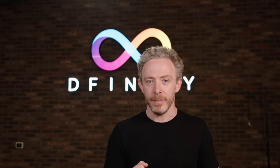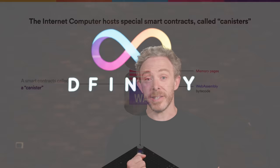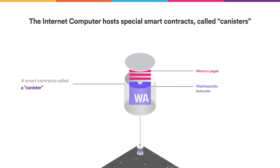Like all blockchains, it is unstoppable and the code it hosts is tamper-proof. The Internet Computer hosts special smart contracts called canisters. A canister is a bundle of WebAssembly bytecode logic, which you can create from any high-level programming language such as Rust or Motoko, and memory pages that the code runs inside.